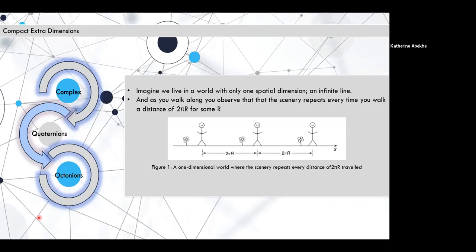So imagine we live in a world with only one spatial dimension. And as you walk along, you observe the scene repeats every time you walk a distance of 2πR for some R. And in fact, not only the scene repeats, but the events that happen at the scene, such as meeting your friend, you do love me.